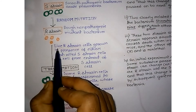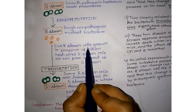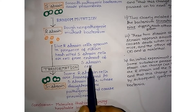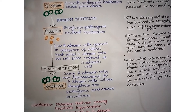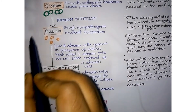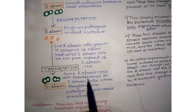In the first experiment, live R-strain cells are grown in the presence of either heat-killed S-strain cells or a cell-free extract of S-strain cells. We incubate R-strain cells with the extract collected from S-strain cells, or we incubate R-strain cells in the presence of heat-killed S-strain — S-strain killed by applying heat.